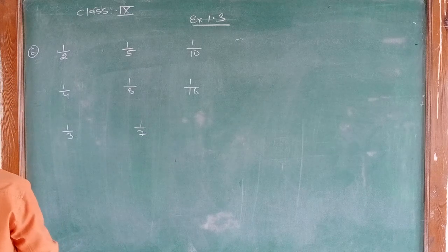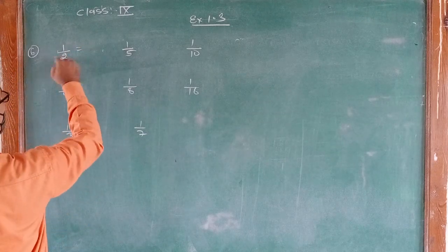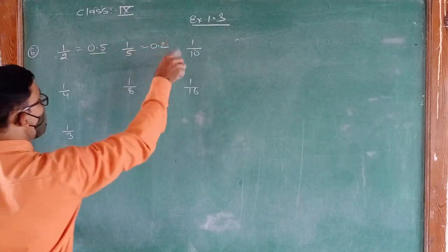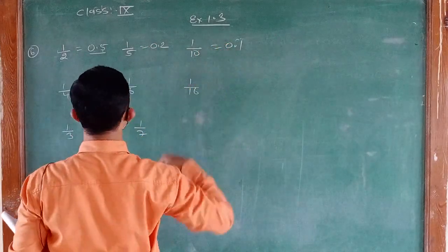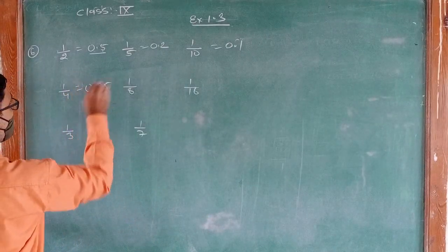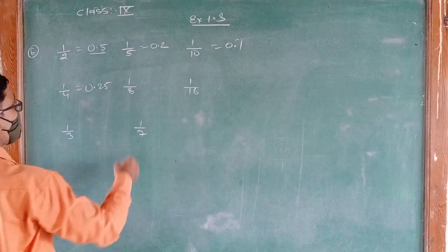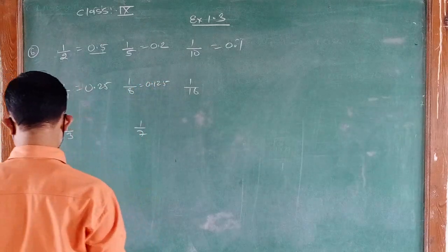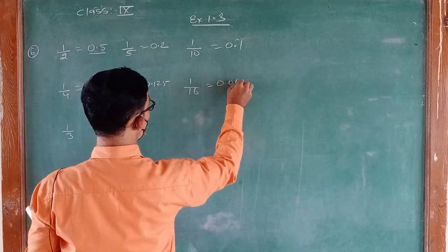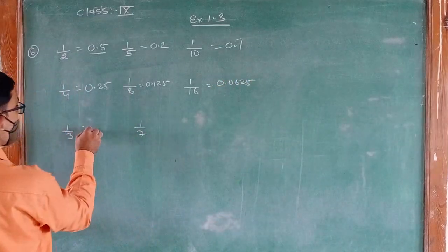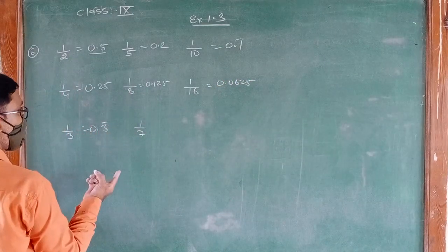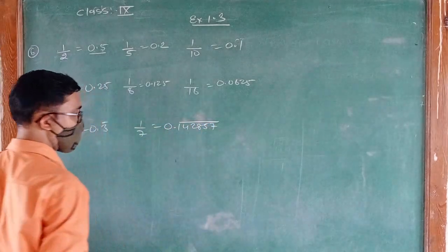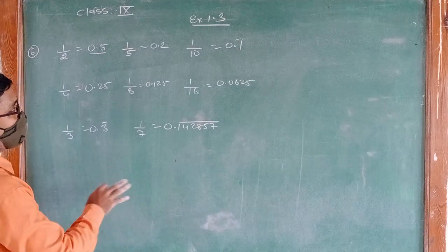Now let's see the answers for these examples. 1 upon 2 gives 0.5, 1 upon 5 gives 0.2, 1 upon 10 gives 0.1, 1 upon 4 gives 0.25, 1 upon 8 gives 0.125, 1 upon 16 gives 0.0625. And for 1 upon 3, we get 0.3 bar. And for 1 upon 7, the decimal is 1, 4, 2, 8, 5, 7 repeating.